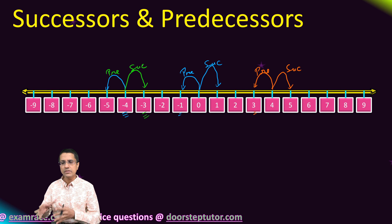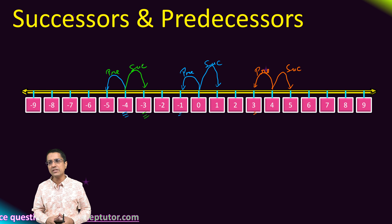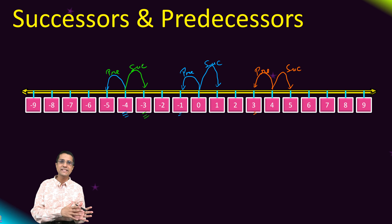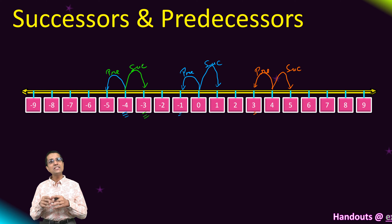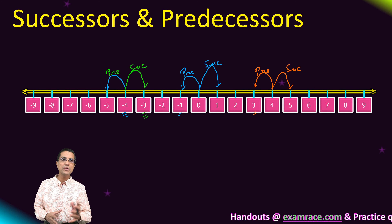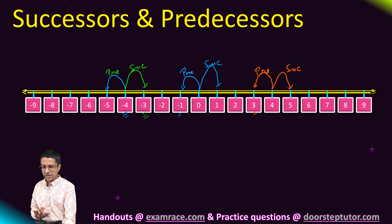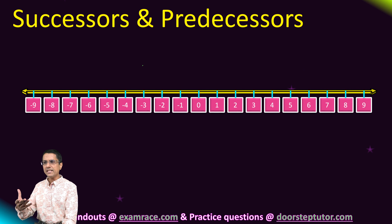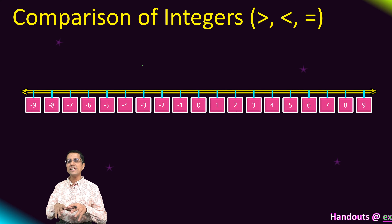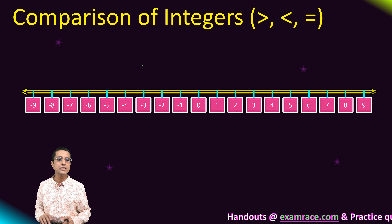So all numbers, whether they are negative integers, 0, or positive integers, all numbers on this number line of integers have a predecessor and a successor. The predecessor is 1 less than the number, and the successor is 1 more than the number. That is the basic concept. Using this, we can now understand how the greater than and less than relation works across the whole number line.